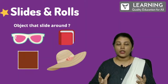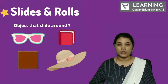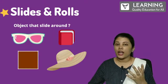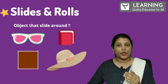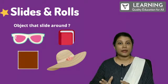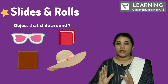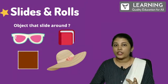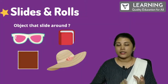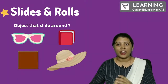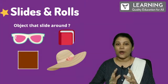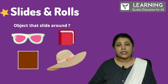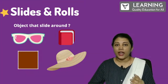Now you have understood what is the difference between slides and rolls. Am I clear? Can you understand whatever I am explaining? If you are getting my point, then tell me any two objects other than what I have shown you — any two objects which can simply roll and slide. Comment down below; I will be reading all the comments and I will tell you more about it.